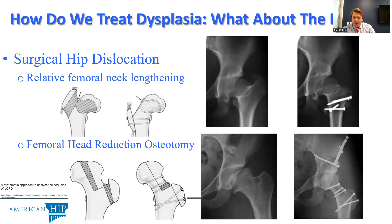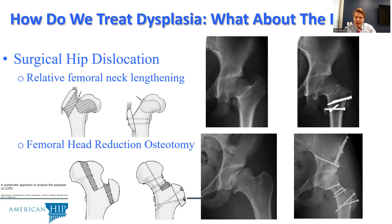Additional femoral osteotomies can be performed for truly complex femoral deformities. These involve surgical hip dislocations to address intraarticular femoral head and neck abnormalities, including relative femoral neck lengthening, seen above, and femoral head reduction osteotomy, seen below. These are quite rare cases and are not commonly performed.